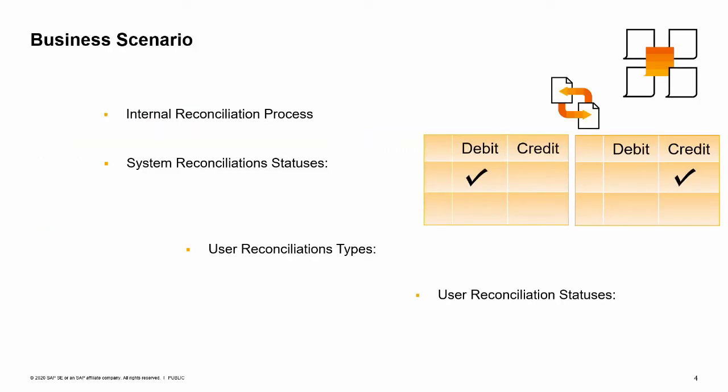Imagine that you are implementing SAP Business One at a new customer, OEC Computers. Maria, the accountant of OEC Computers, asks you more about the internal reconciliation process. She remembers you told her previously that among other processes, it relates to period end closing. Maria is happy to hear that most internal reconciliations are performed automatically by SAP Business One. These are the system reconciliations. Automatic system reconciliations can be full or partial.